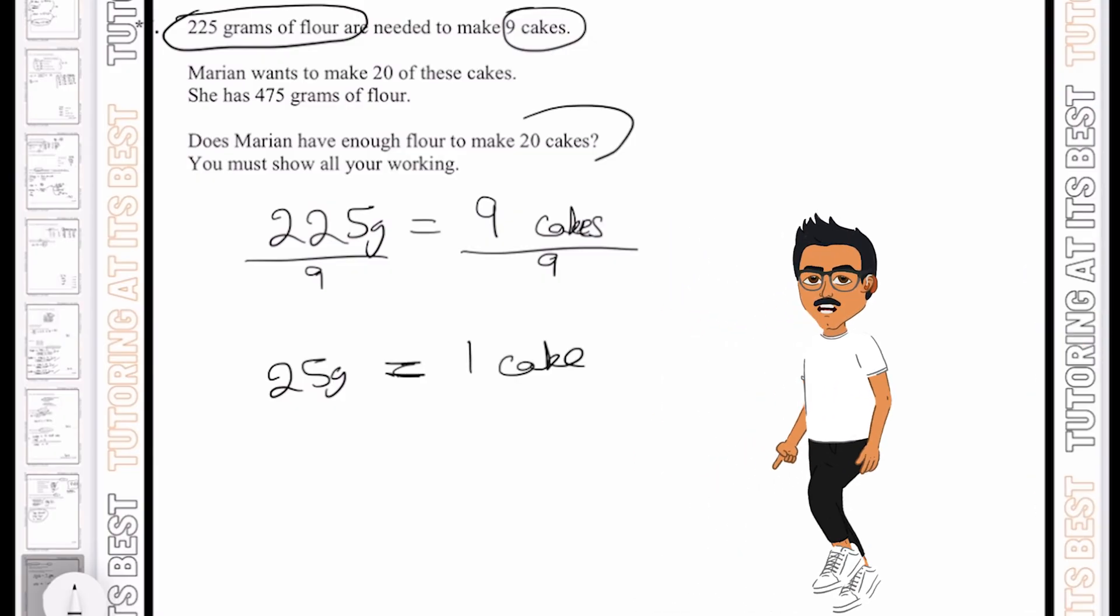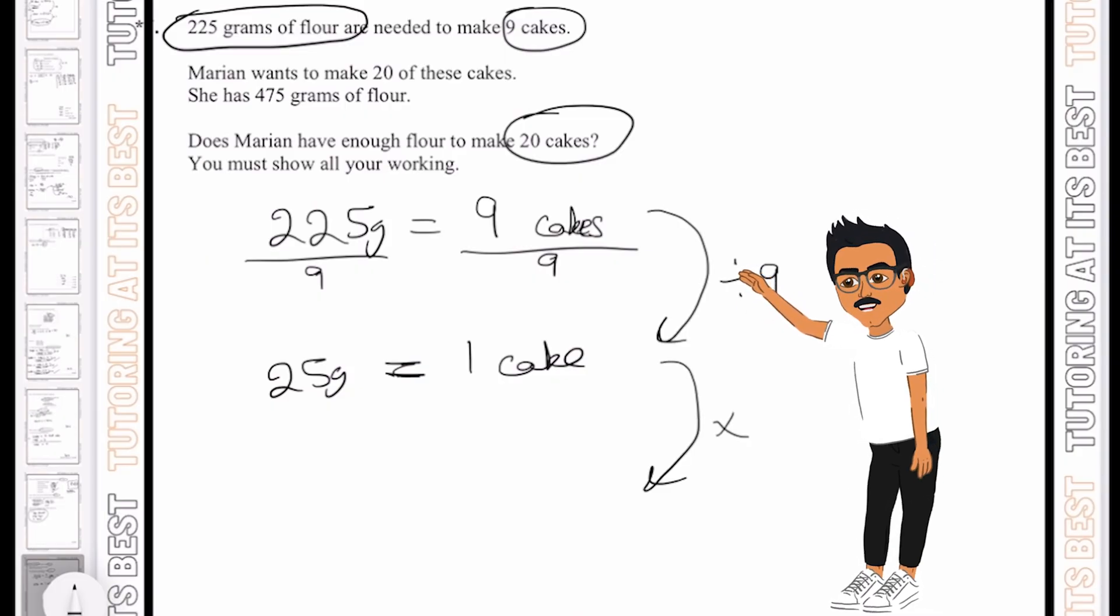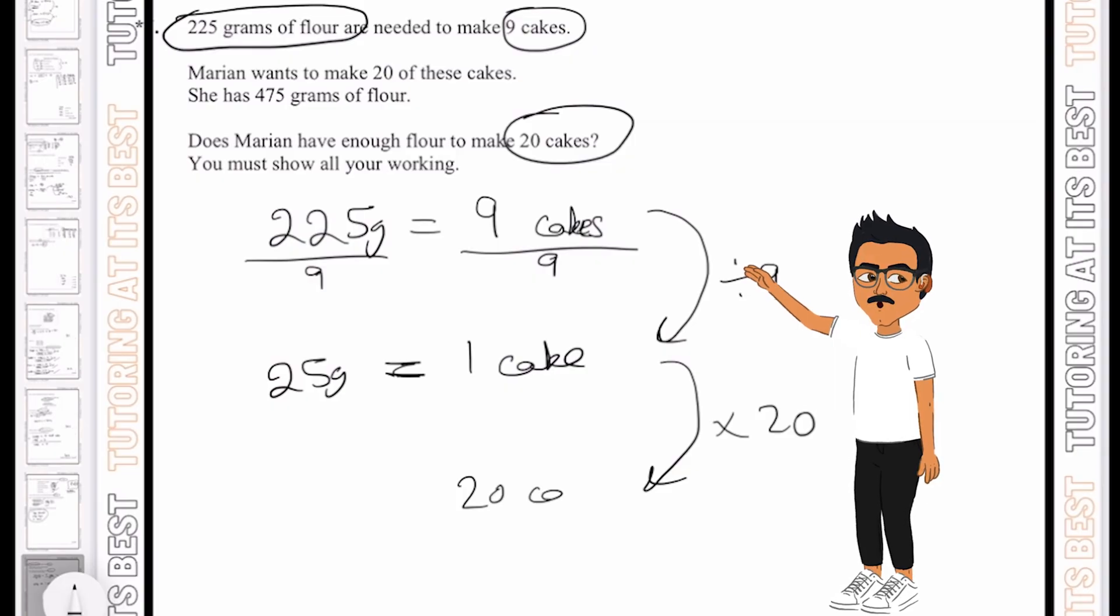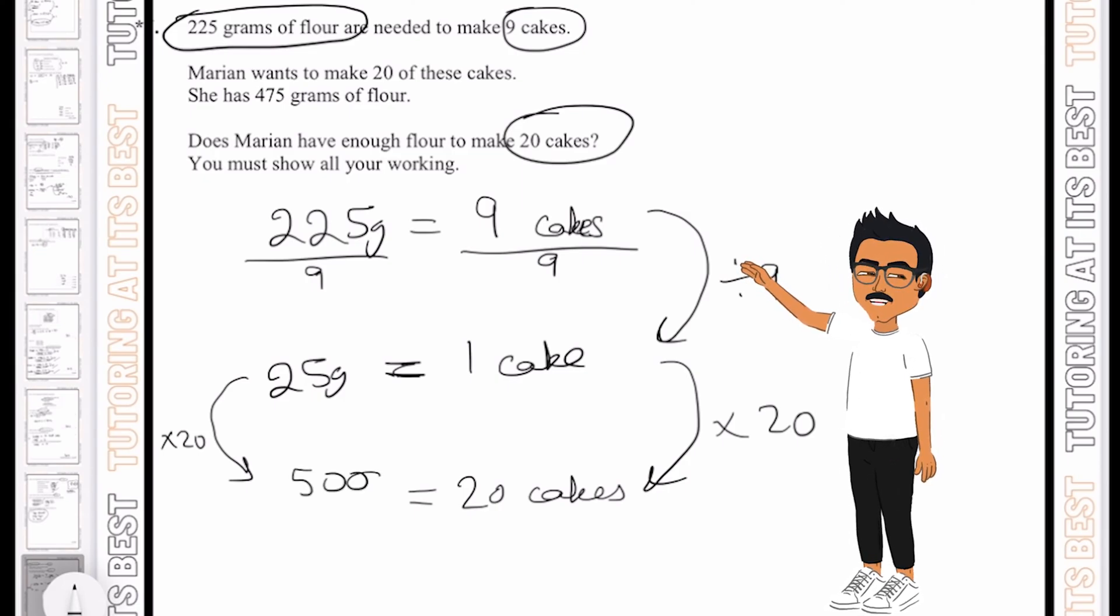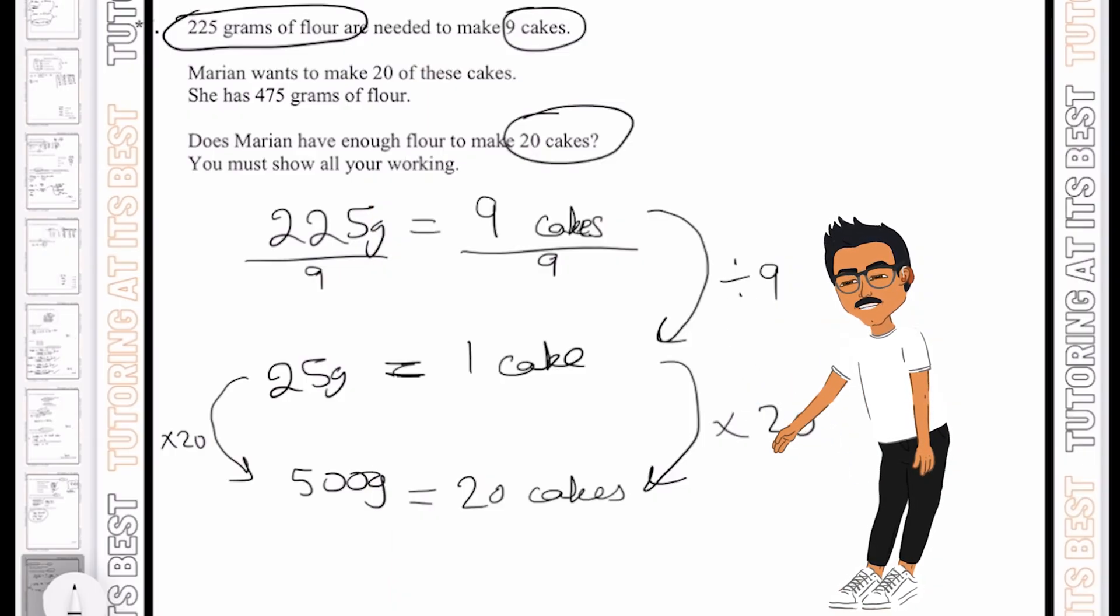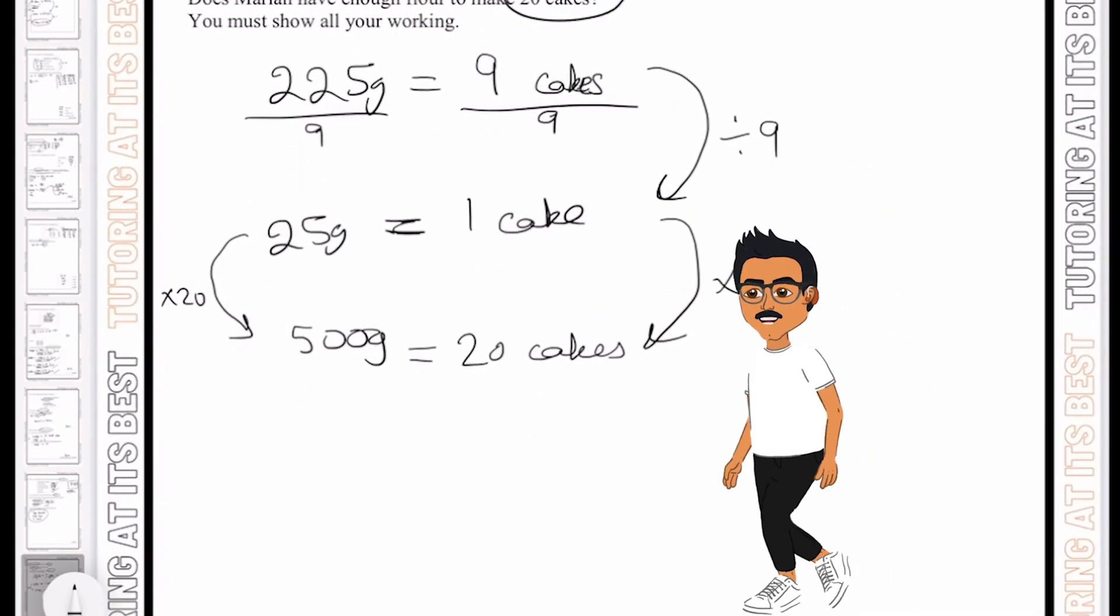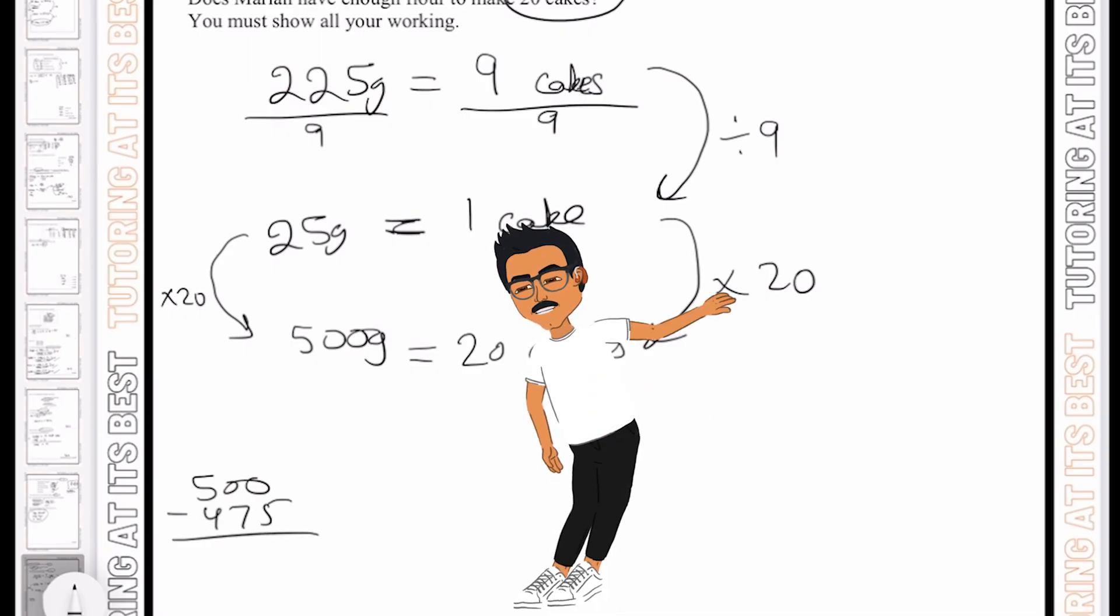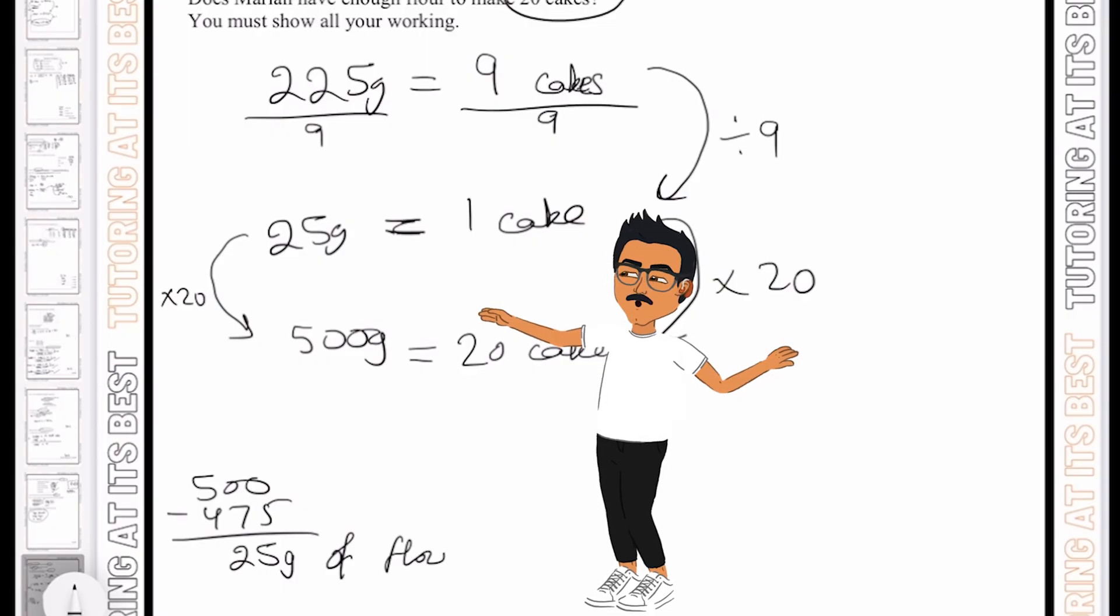We then need to multiply this to get 20. So again, as you can see, I've divided by 9, but now I'm going to times by 20 to get 20 cakes. So now again, if we have 25 grams times by 20, that would give us 500 grams. And that shows us that Marion does not have enough flour. She has 475 and we need 500. So if we have 500 take with 475, that is 25 grams of flour needed.